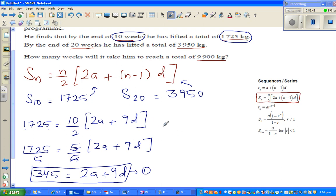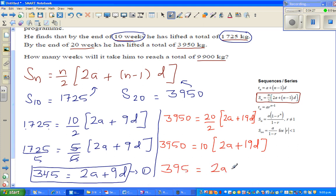Now for equation 2. I can say S20 is 3950, so 3950 equals 20 over 2 times (2a plus 19d). That simplifies to 3950 equals 10 times (2a plus 19d). Dividing both sides by 10, we get 395 equals 2a plus 19d. This is equation number 2.